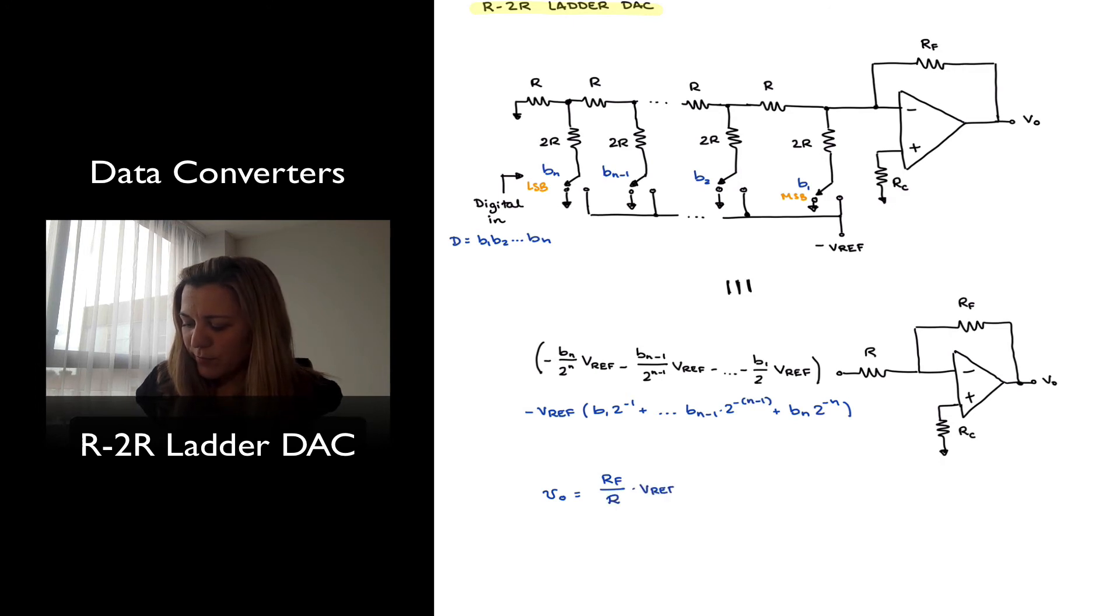And so I will end up with RF divided by R times VREF times B1, 2 to the minus 1, plus dot dot dot, Bn minus 1, 2 to the negative n minus 1, plus Bn, 2 to the negative n. So this is my output voltage, similar to what we had before.